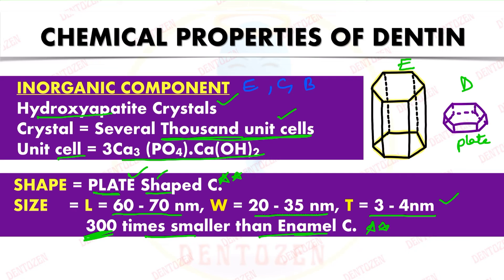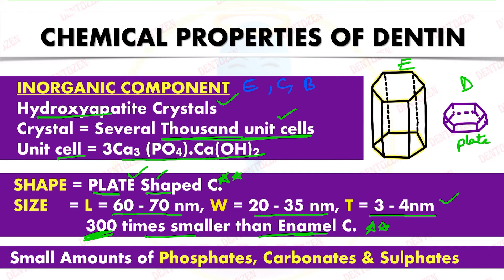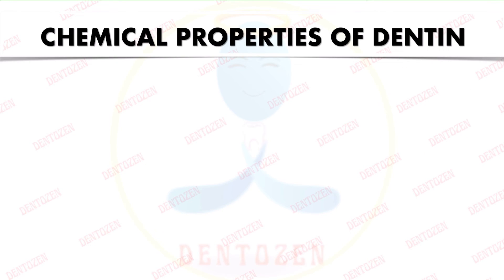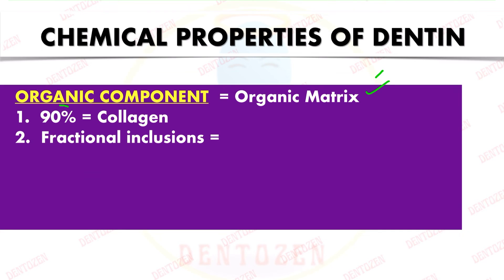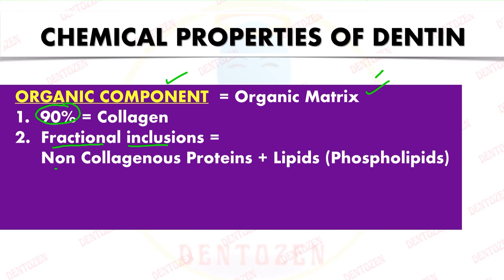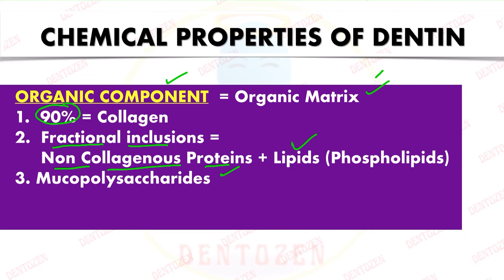Other inorganic substances include small amounts of phosphates, carbonates, and sulfates. The organic component, though less than inorganic by proportion, is very important and is also called the organic matrix. Collagen constitutes 90% of this organic component.